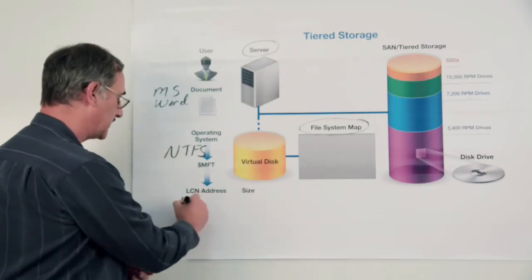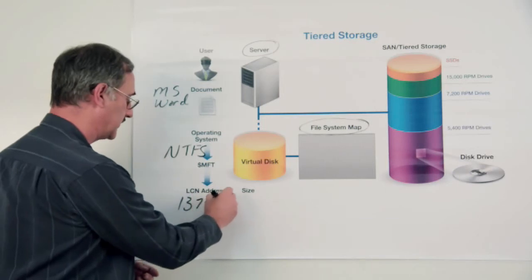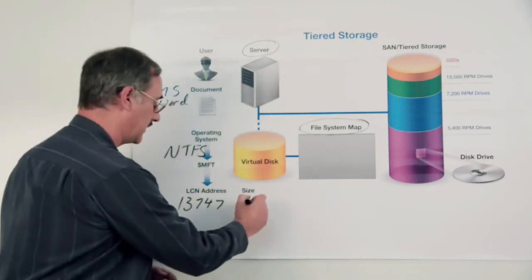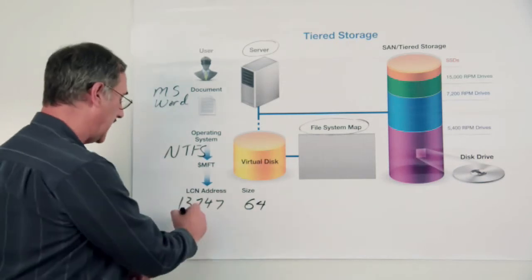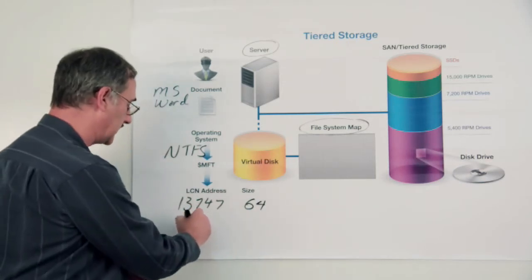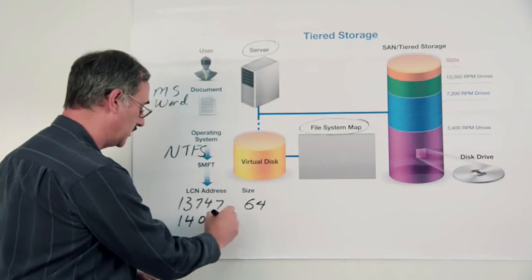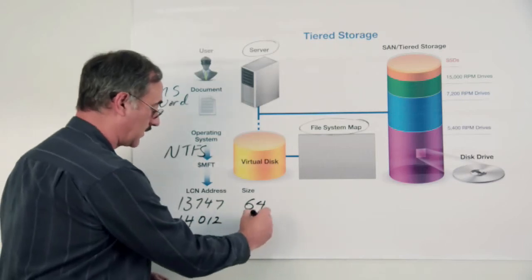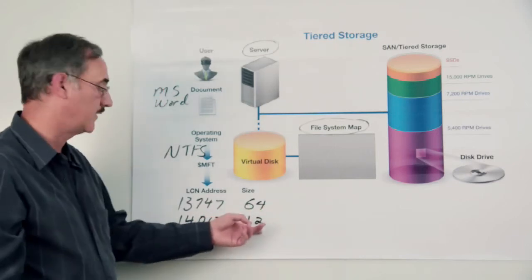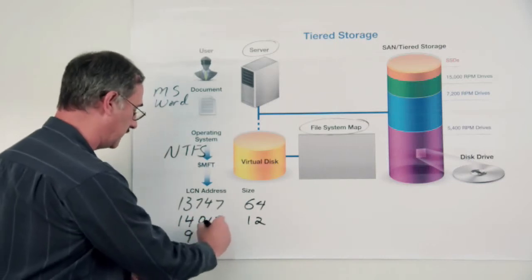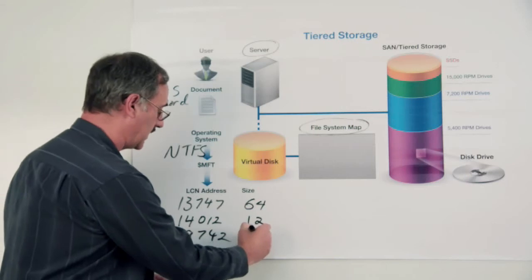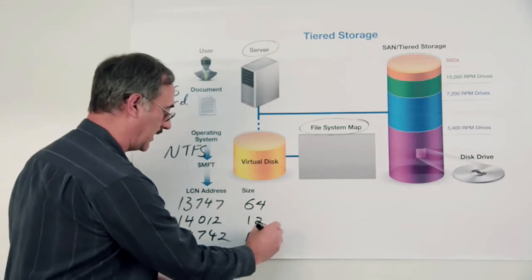Now a file will be referenced based upon its logical cluster address. So maybe the address starts out at 13747 for a size of 64 clusters. Then maybe the next piece of that file begins at 14102 for a cluster size of 12.